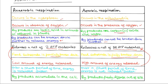Anaerobic respiration releases a low amount of energy, while aerobic respiration releases a high amount. Over a short period of time, energy is released much faster in anaerobic respiration, while within the same short period, not as much energy is released in aerobic respiration. Aerobic respiration requires a longer time to release all the energy, but anaerobic respiration is very quick and releases energy faster.